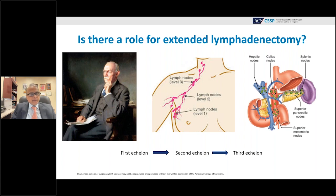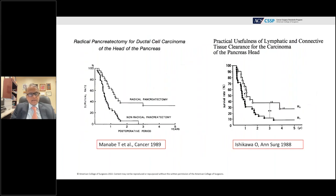People began asking whether extended lymphadenectomy can improve survival, based on the Halstedian principle that lymph nodes may spread in an orderly fashion from first to second to third echelon, as initially thought in breast cancer. This thought was bolstered by retrospective single-institution studies from Eastern countries — by Manabi and Ishikawa — showing that radical lymphadenectomy was associated with improved survival, though these were studies with significant selection bias.